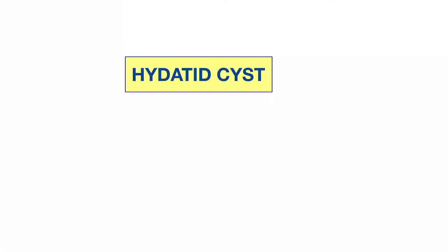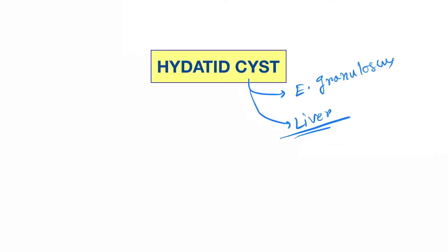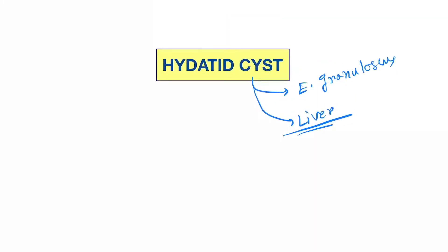Hello friends, today our topic is the hydatid cyst. The hydatid cyst is caused by Echinococcus granulosus and it is present inside the liver. Let's see the structure and identification of the hydatid cyst.